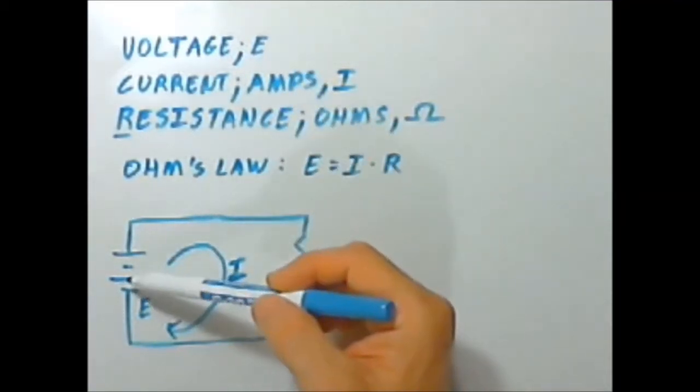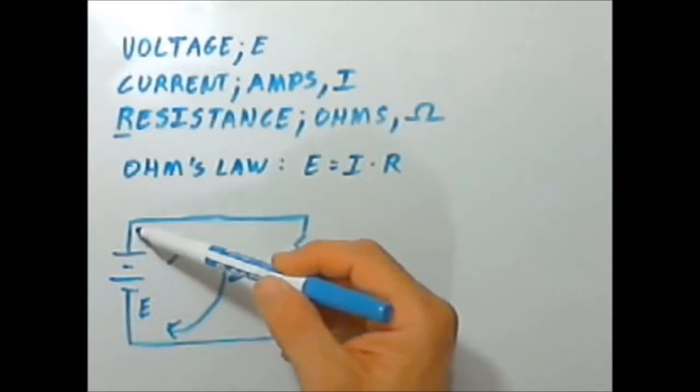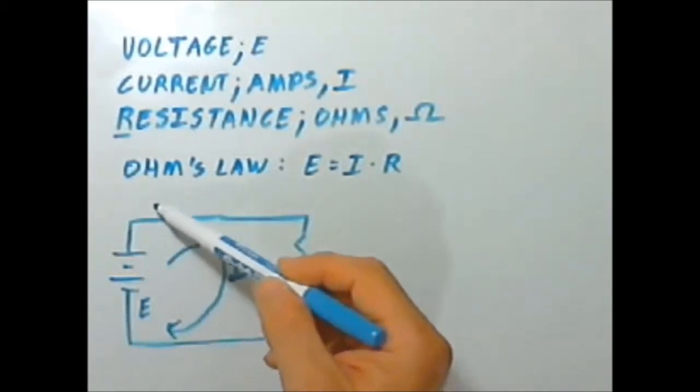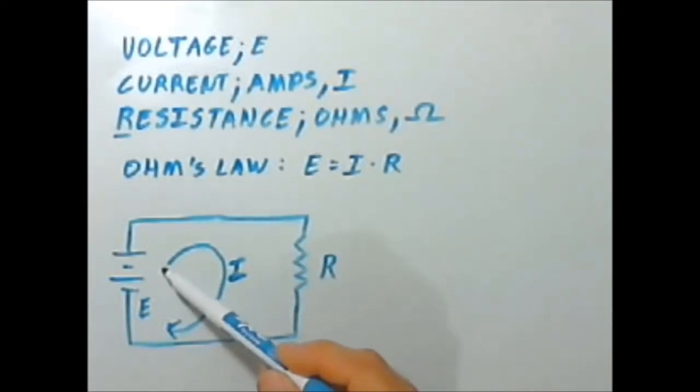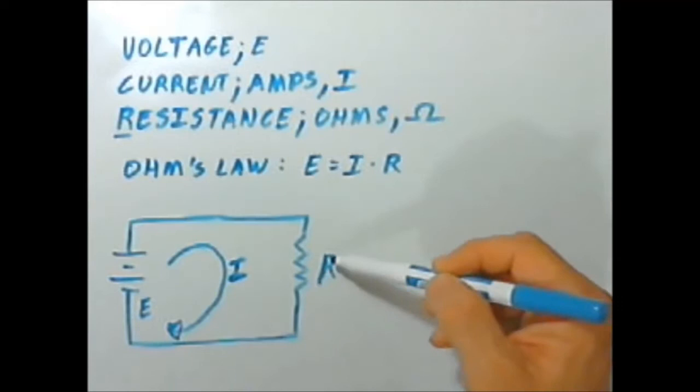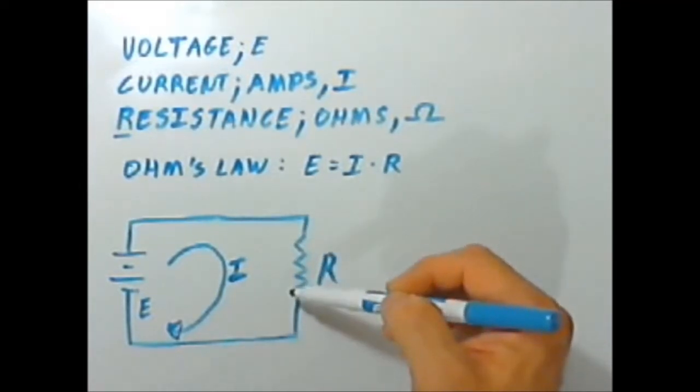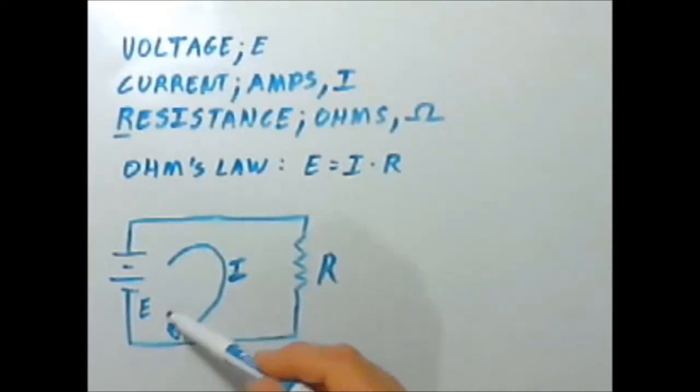Voltage is the amount of pressure behind the electrons that our power supply produces. Current is the actual volume or number of electrons that are flowing through our circuit, and resistance is the opposition that whatever load we connect provides to the current that this source wants to deliver.